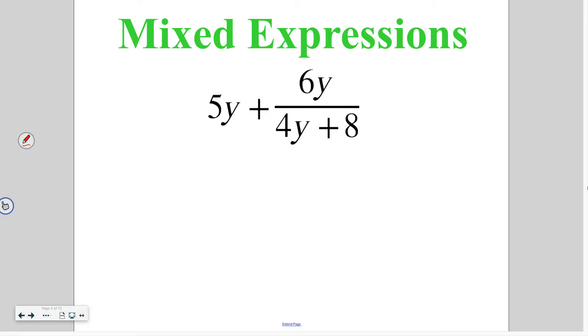Mixed expressions. Just like we did in the last lesson, in order to be able to add things we need to have a common denominator. I'm at 5y over 1. I need to have a common denominator so I'm going to have to multiply by this denominator right here. So we're going to multiply top and bottom, 5y times 4y plus 8 over 1 times 4y plus 8, and when I multiply by 1 it just gives me that expression itself.